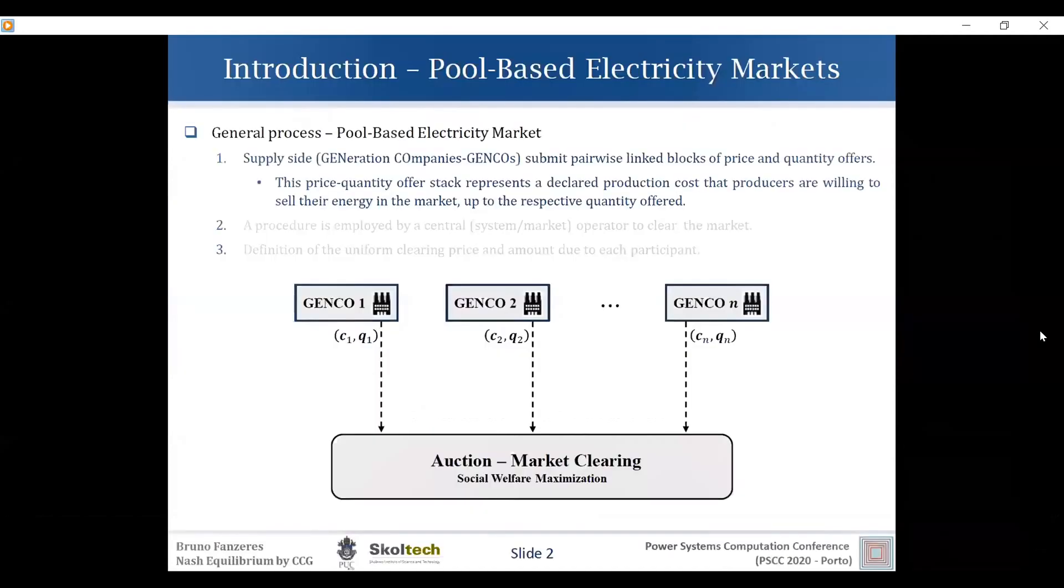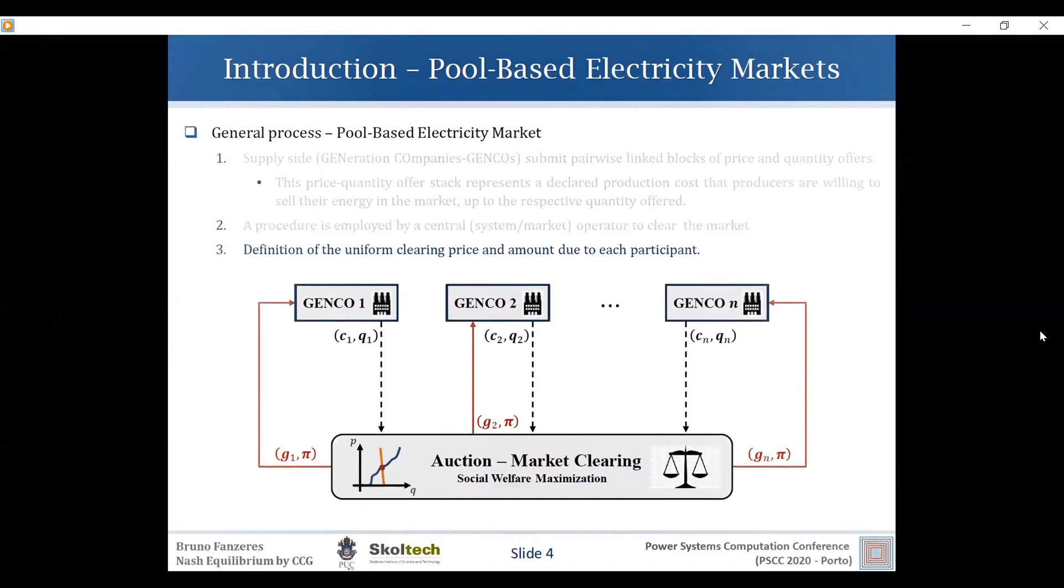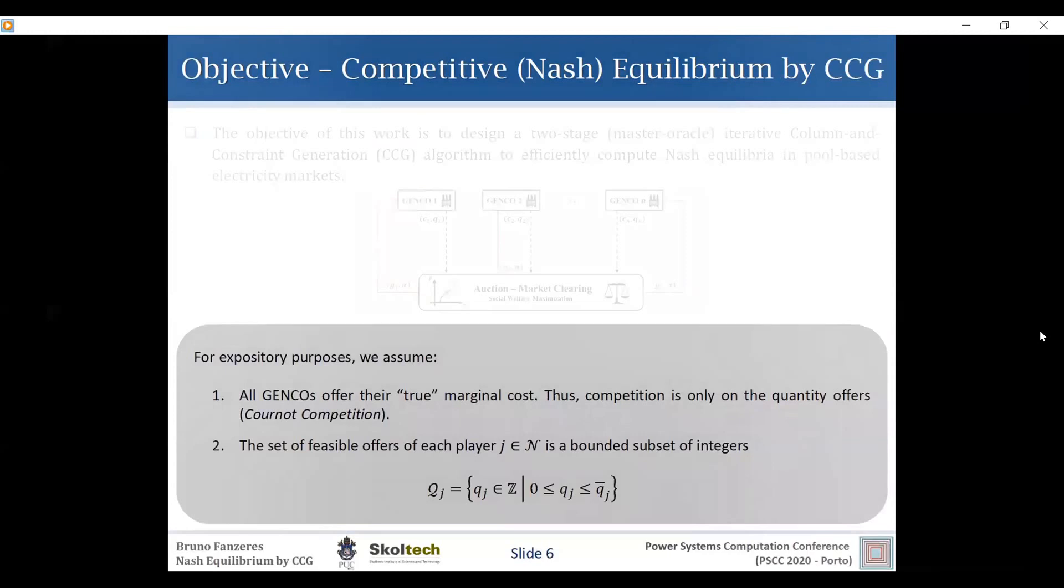So the idea of this electricity pool-based electricity market is we have a set of N generation companies competing in this market by submitting a pairwise linked block of price and points to offers. And while the market operator clears the market by using some procedure and reporting back both the uniform clearing price and the amount due to each participant, the dispatch of each participant. And so the objective of this work is to study a competitive equilibrium, more particular the Nash equilibrium in this market setting. And for suppository purpose, what we assume was that, well, firstly, all Jenkins, all competitors offer their true marginal costs. So the competition will be on quantities, the type of criminal competition.